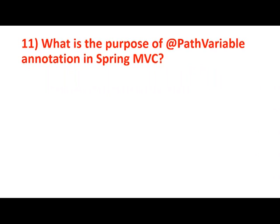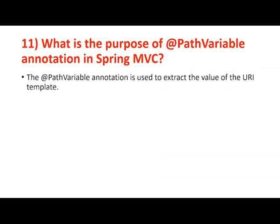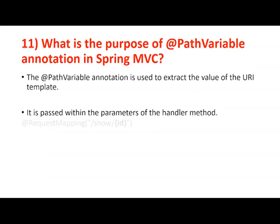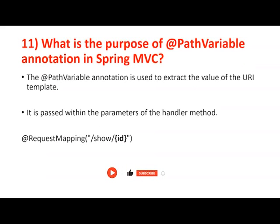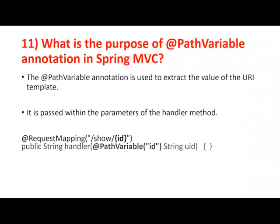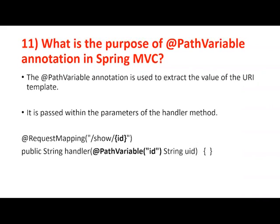What is the purpose of the @PathVariable annotation in Spring MVC? If you want to extract data from an incoming request URI that is sent using the slash symbol representation and read it using method handler parameters, you use @PathVariable. For example, in @RequestMapping the curly braces around ID indicate a value that comes at runtime, like /show/10 or /show/200. You have to read it using @PathVariable by specifying the data type and local variable name matching the path variable.